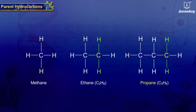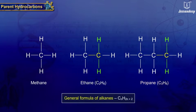From this we can infer that the general formula of alkanes is CnH2n+2, where n is the number of carbon atoms.